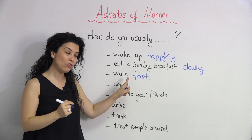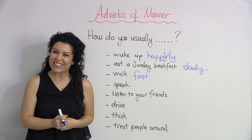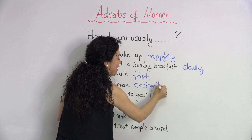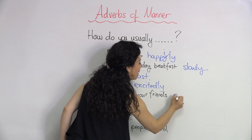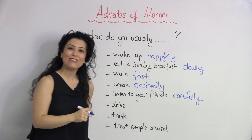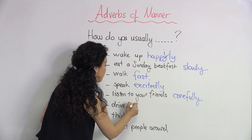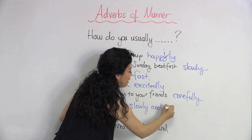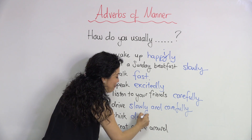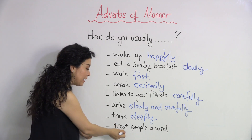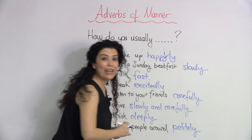Remember, 'fast' is an irregular one — you don't add -ly. How do you usually speak? I usually speak excitedly. How do you usually listen to your friends? I listen to my friends carefully — they are important. How do you usually drive? I usually drive slowly and carefully. How do you think? I usually think deeply. How do you treat people around you? Politely — or you can say kindly.